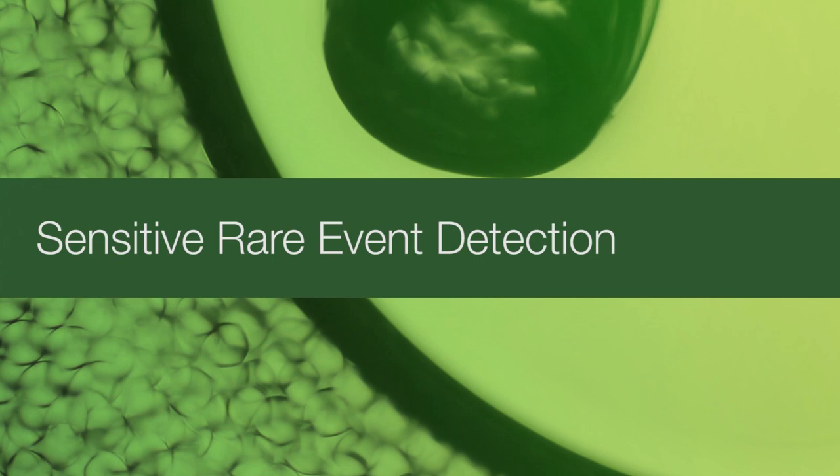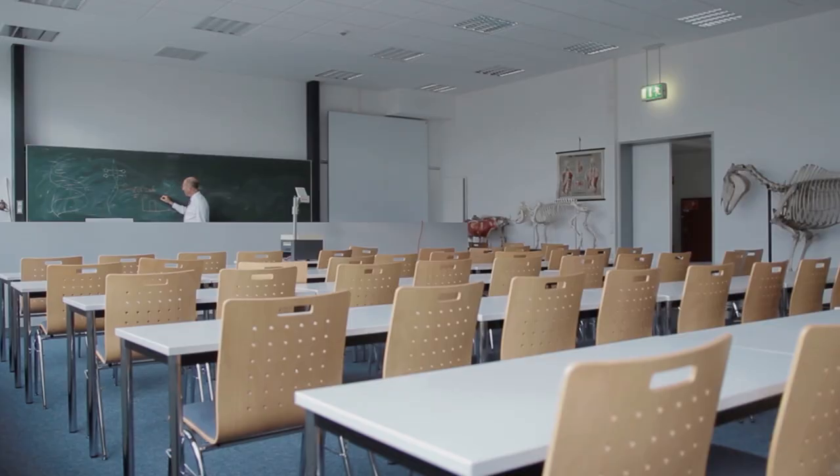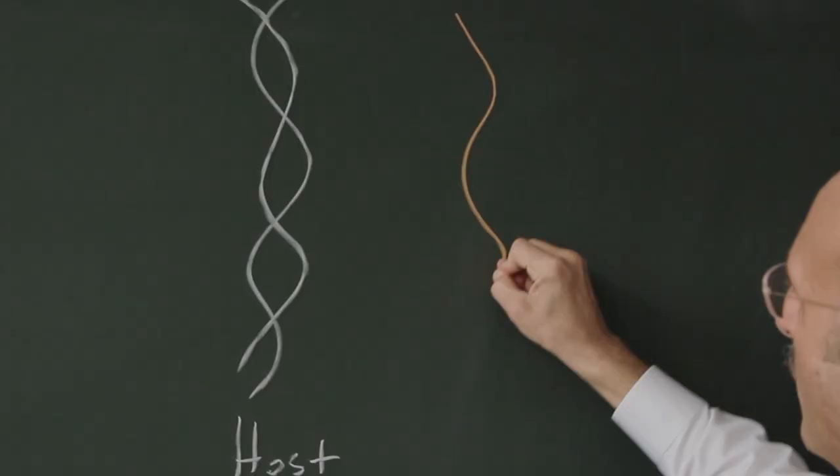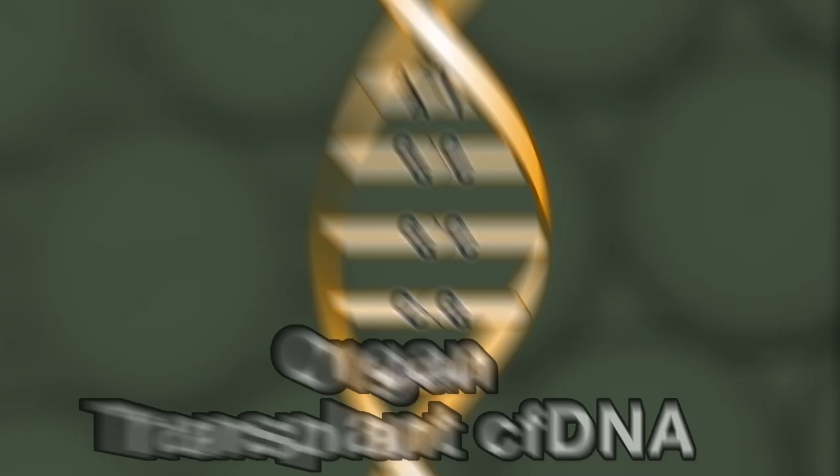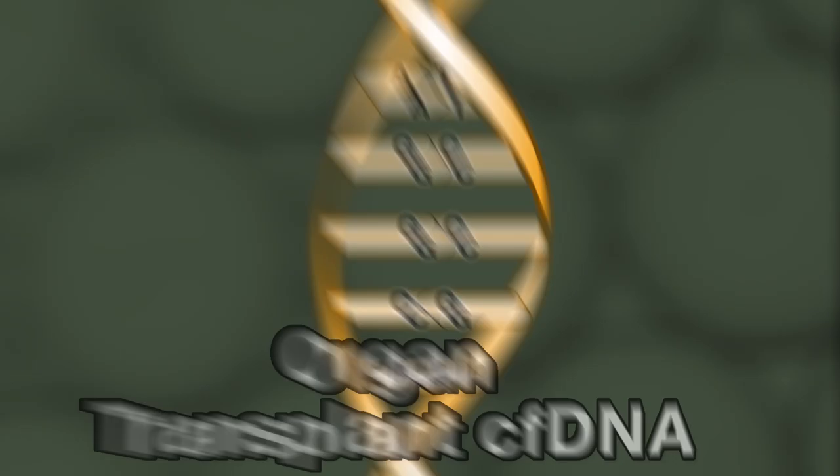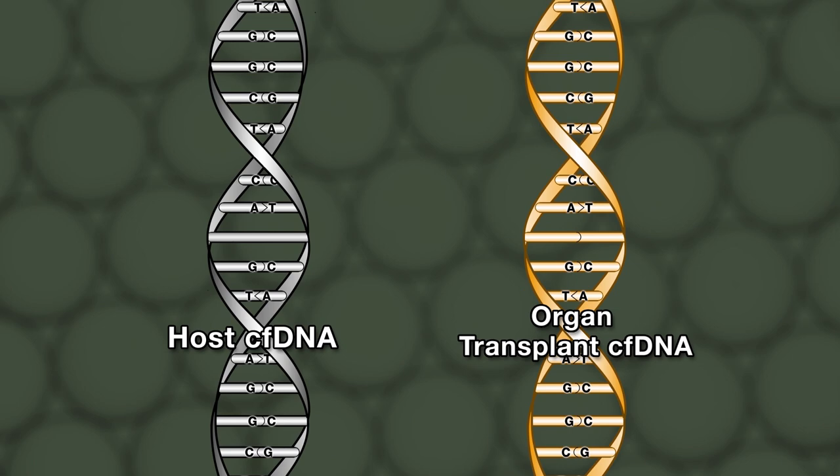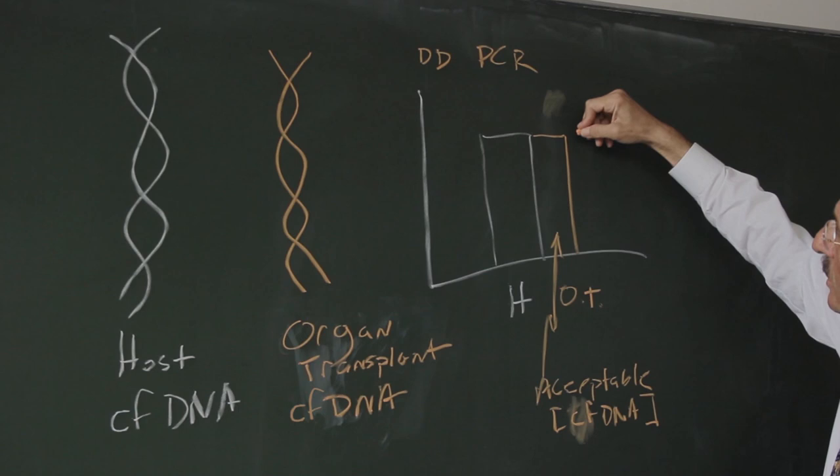The basis of our blood tests for organ transplant integrity is SNPs, single nucleotide polymorphisms. Where do I see the difference in the SNPs of this host and this organ? Once you find that, you now have the identity of the organ. When that amount of SNP increases in the blood, that's when you know you're starting to get organ rejection.